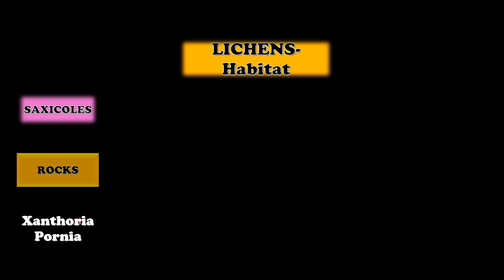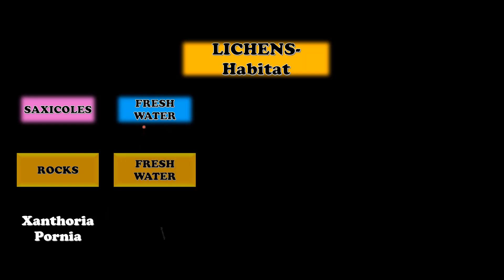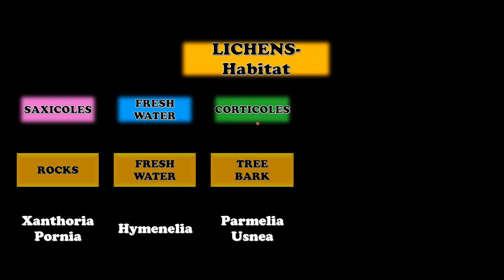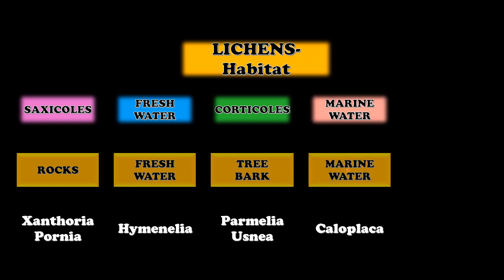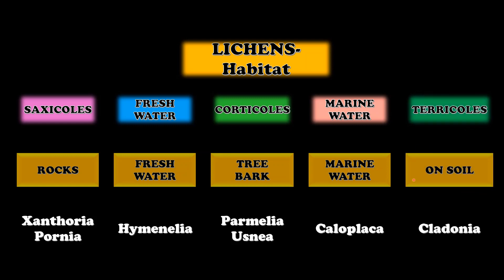Students, these lichens are divided into five groups based on their habitat. Saxicoles grow on rocks — an example is Xanthoria. Examples like Hymenelia are found in fresh water. Corticoles are lichens found on tree branches, with examples like Parmelia and Usnea. Caloplaca is found in marine environments, that is in sea water. Lichens that grow on soil, like Cladonia, are called terricoles.